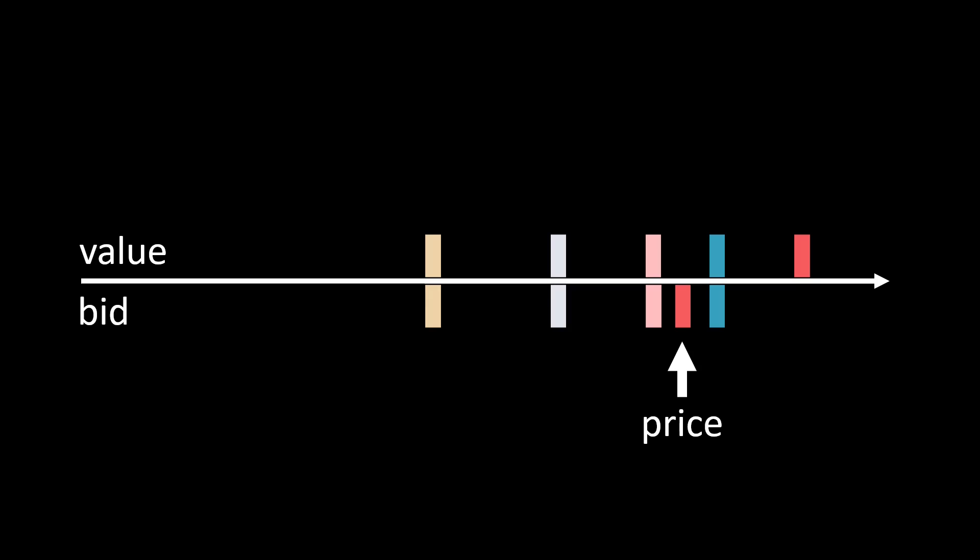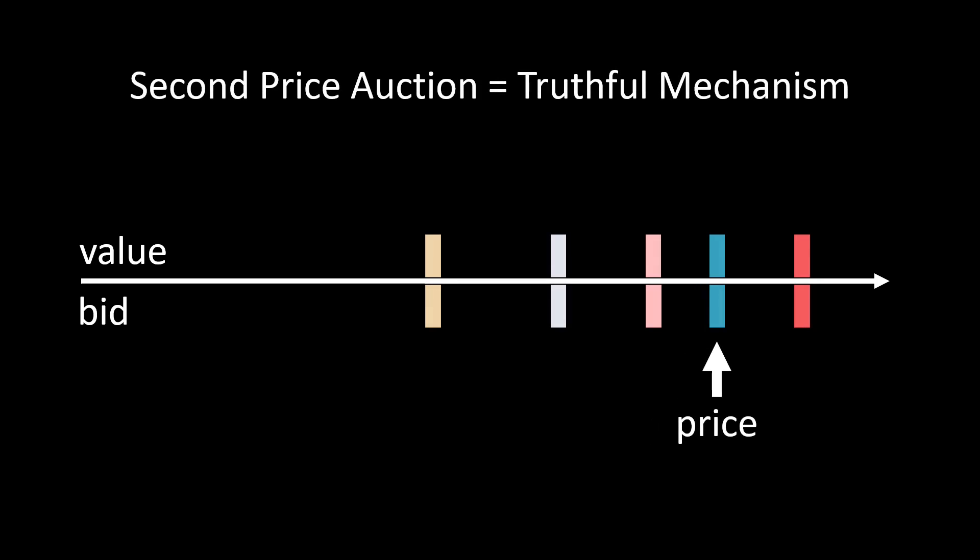This completes our analysis. We showed that players cannot win anything by not bidding their true value. So in a second price auction, it's best to truthfully bid your secret valuation. This is why the second price auction is known as a truthful mechanism. The second price auction has the same winner and the same price as an English auction, but is as fast as a sealed bid auction.